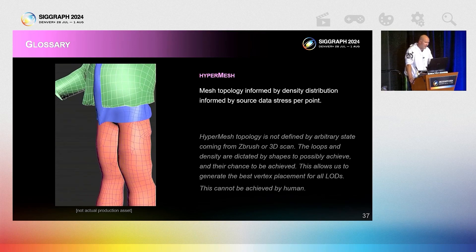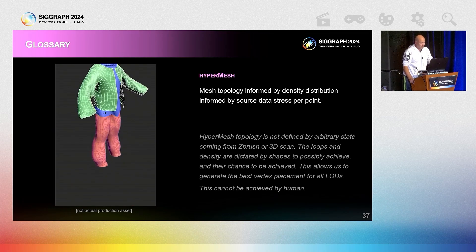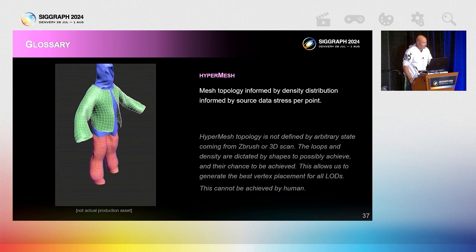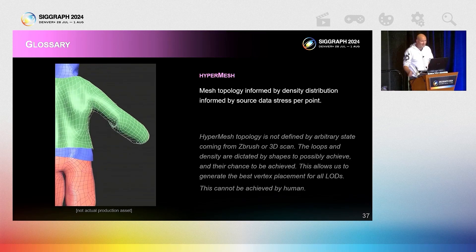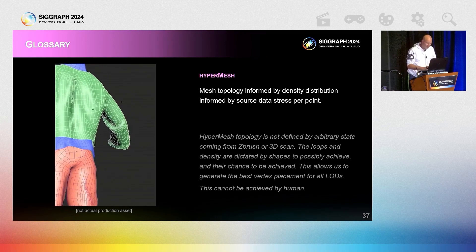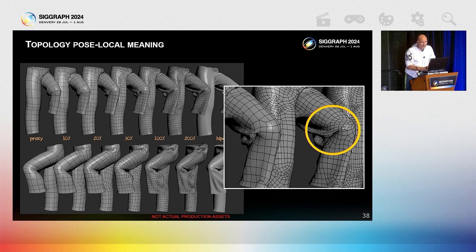Let's call this HyperMesh. Everything here screams wrong — notice extra density on areas which are currently flat, notice unexpected loops. And yet, as the asset deforms, topology starts making local sense. I want to stress here that humans cannot create results of such precision — it's not eyeballable.